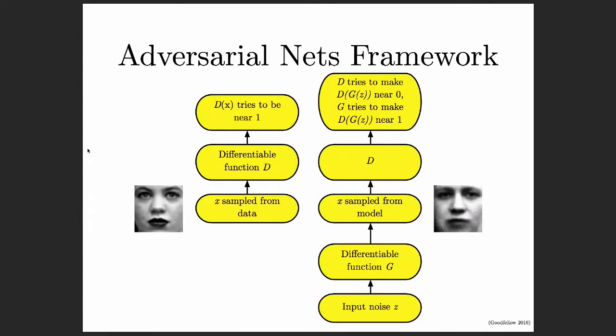Generative adversarial networks are based on a game played between two agents, each of which is a neural network in most applications. One is a generator network that learns to map unstructured noise to the data distribution. Inputs are sampled from a prior distribution over a vector Z — a latent description of the content of the example to be created. After applying a differentiable function G, that noise is transformed into something with structure that is ideally a sample from the data distribution. The other player is the discriminator network — a differentiable function that outputs a probability estimate of how likely the input is real rather than fake, assuming real and fake examples are sampled with equal probability.